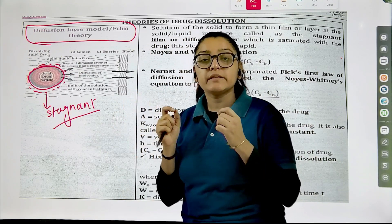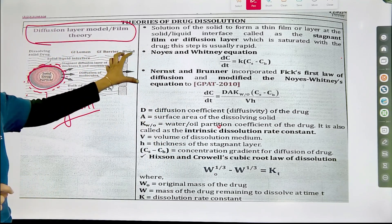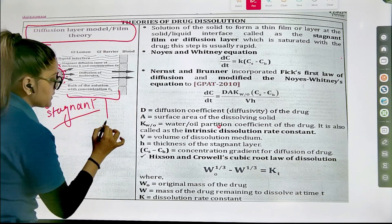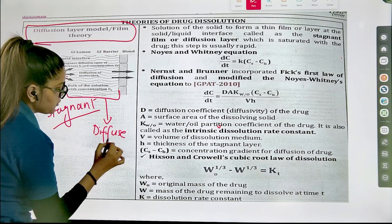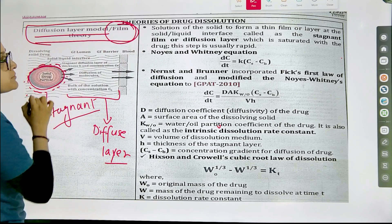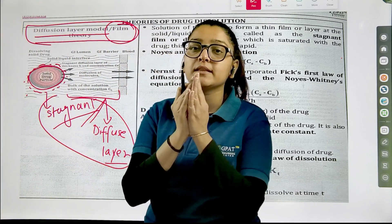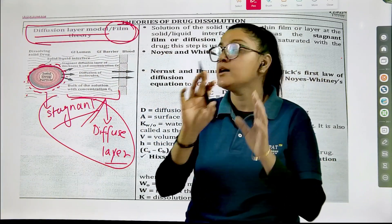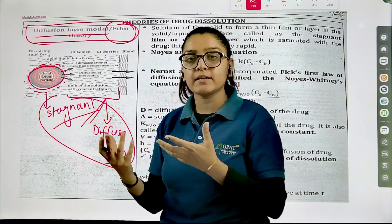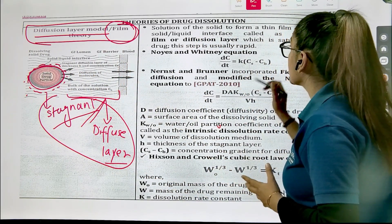In this stagnant layer, the drug concentration is going to be high as compared to the bulk phase. This actually develops a concentration gradient across it, due to which the drug will be moving towards the bulk phase. That movement towards the bulk phase will create another layer — we call it the diffuse layer. In this model that is why we call it the diffusion layer model or the film theory, because diffusion happens from a region of high concentration to a region of lower concentration in the diffuse layer.